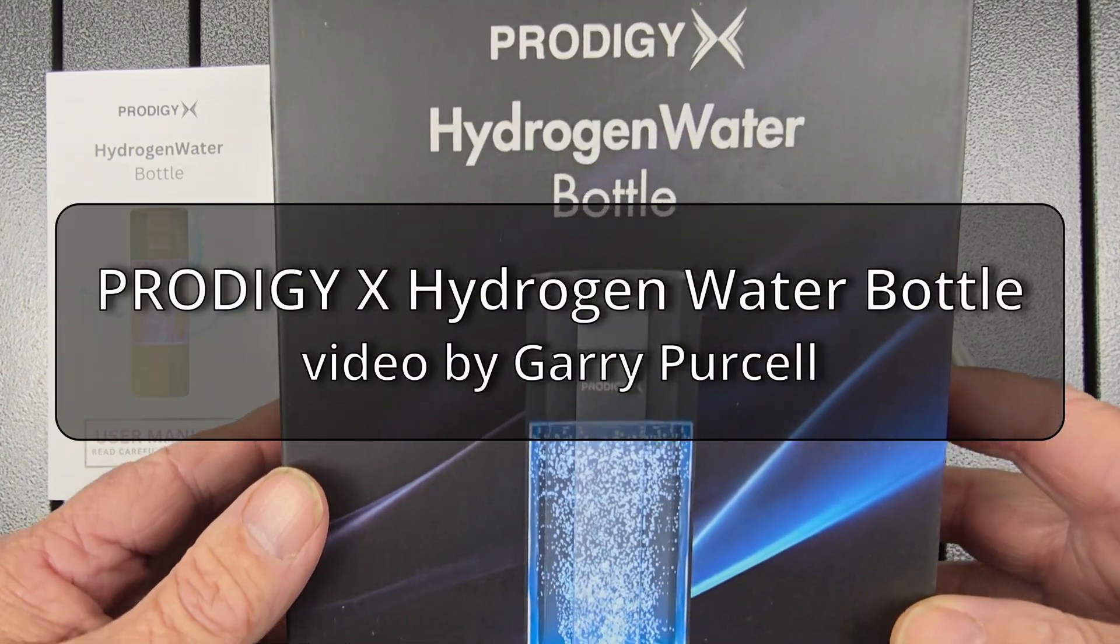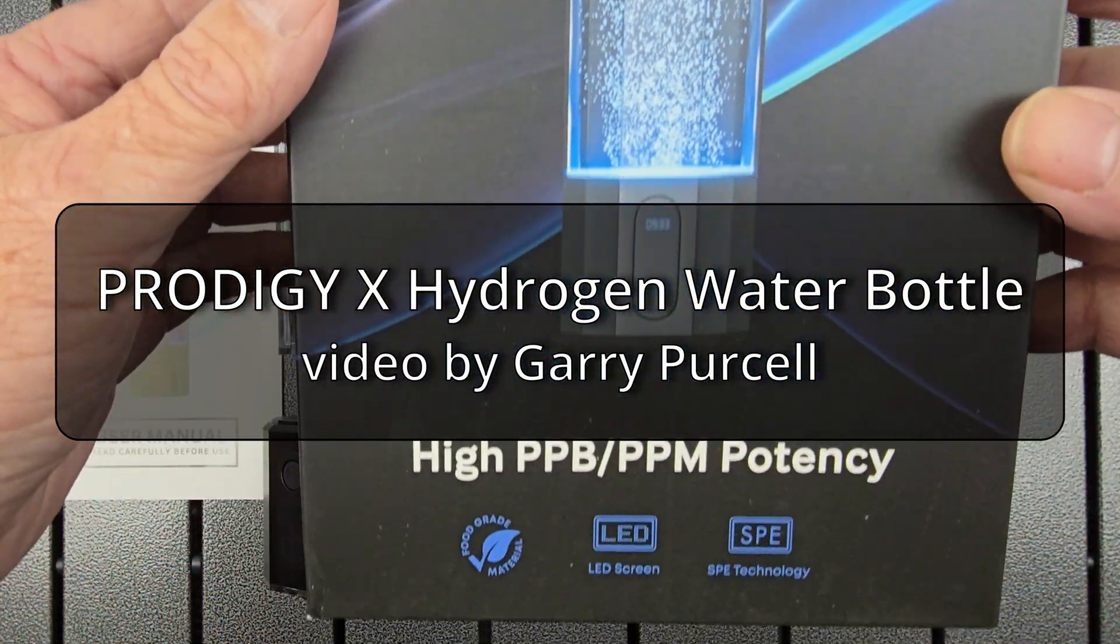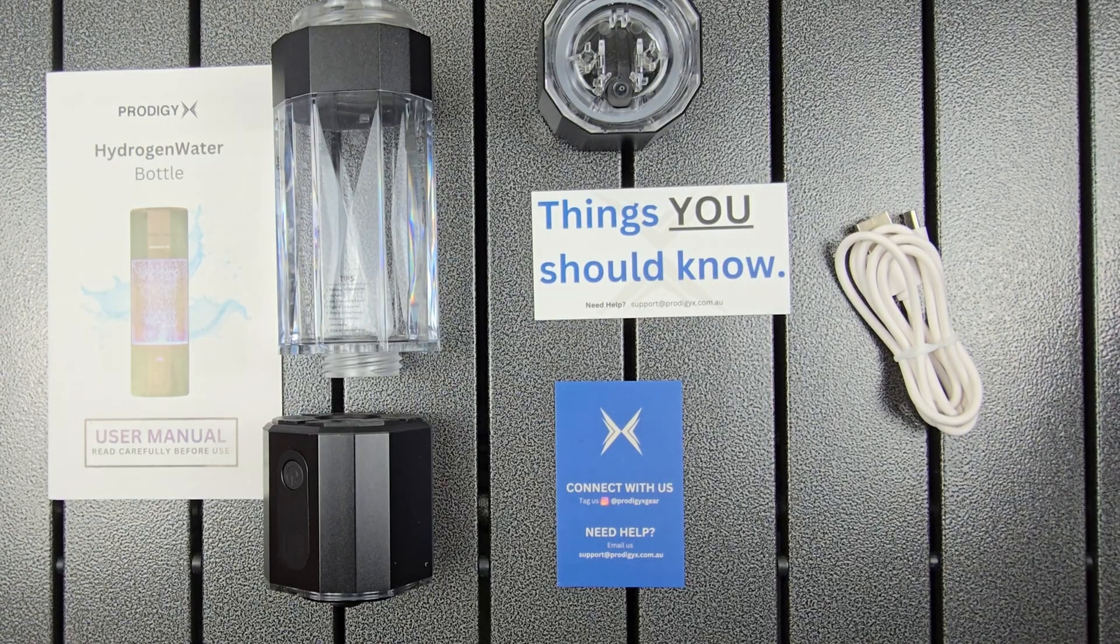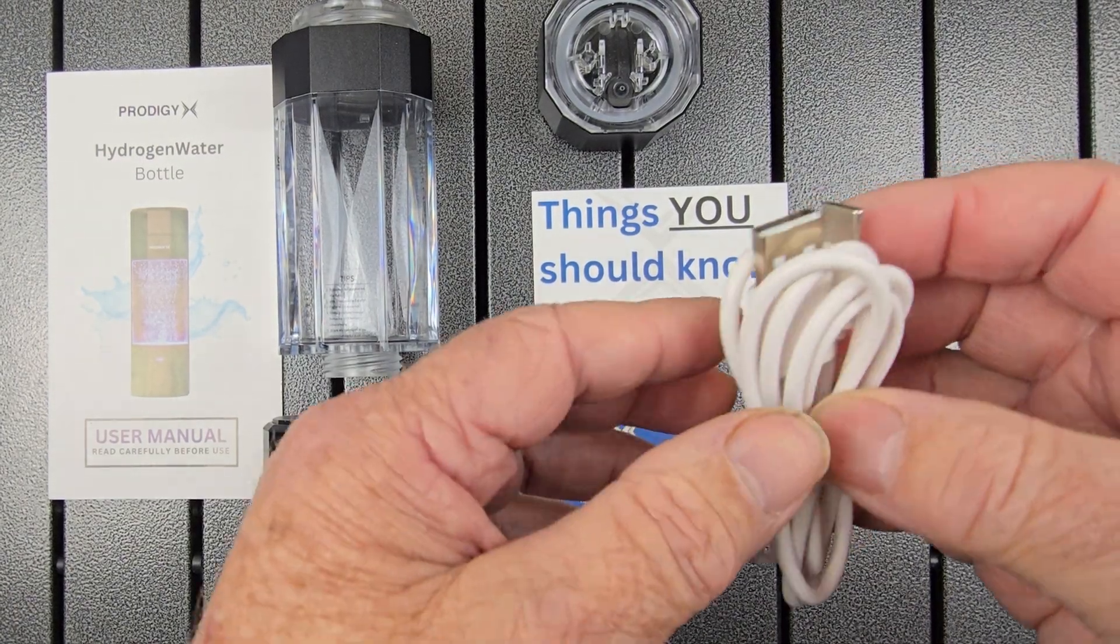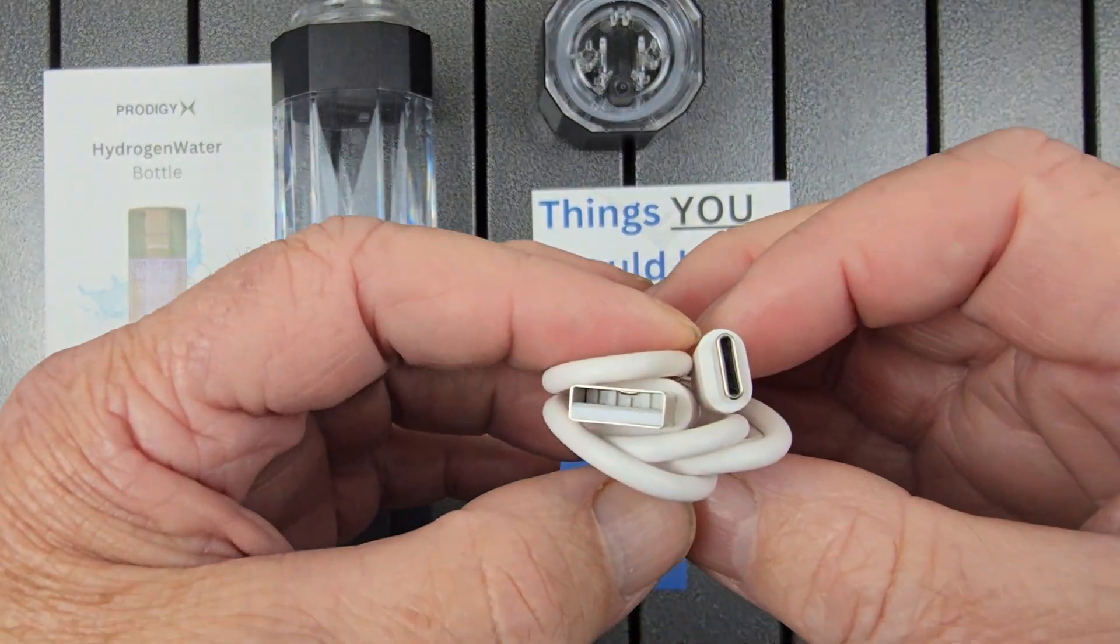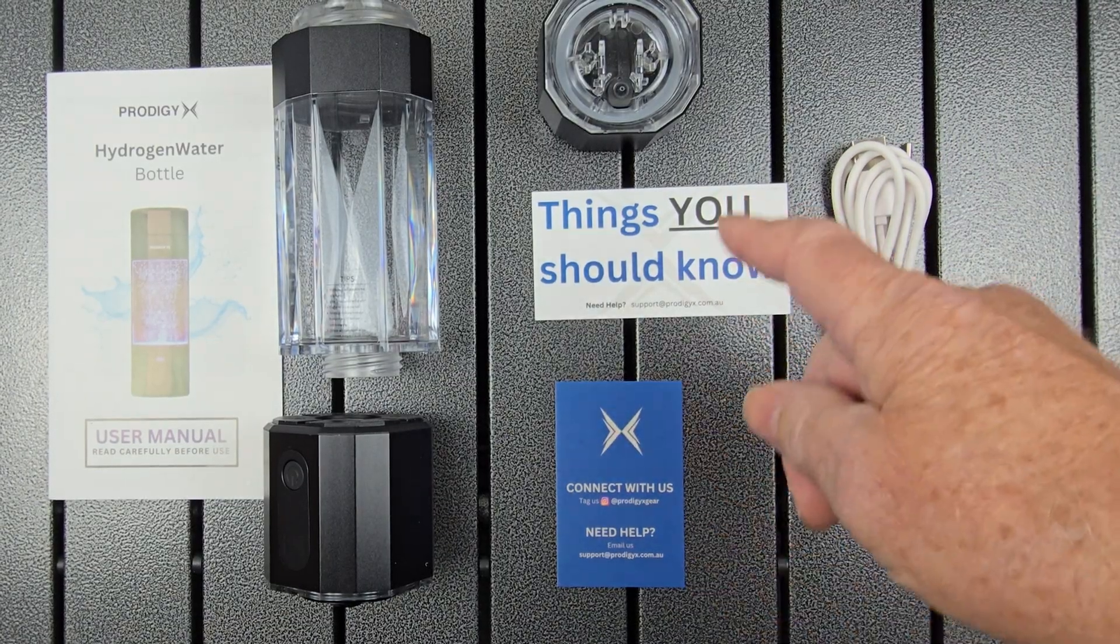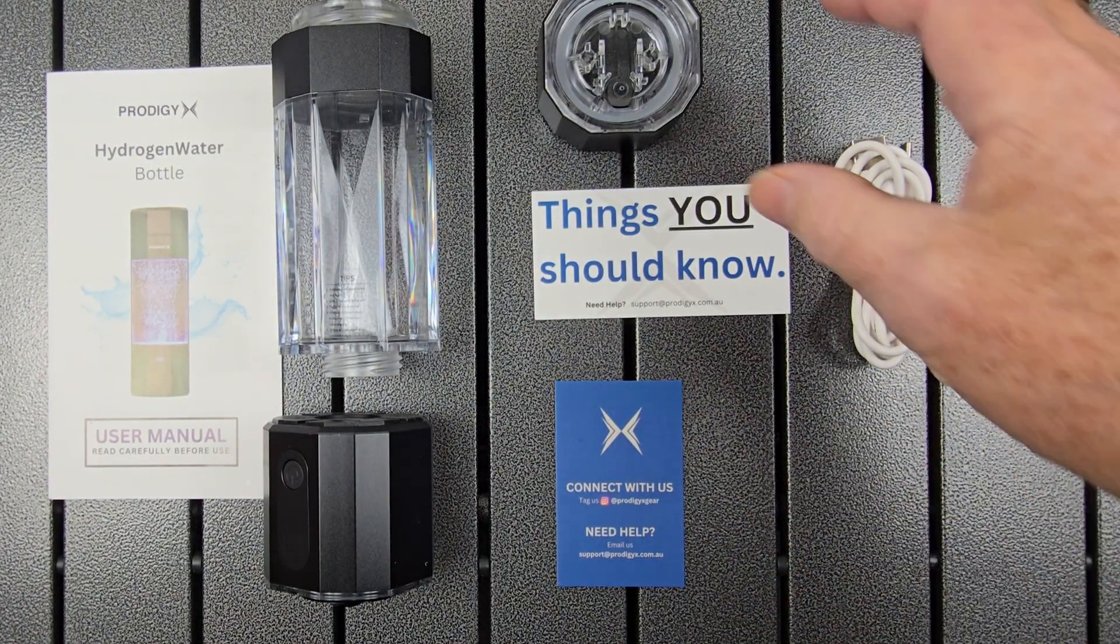This is the Prodigy Hydrogen Water Bottle. This is the box and everything that comes inside. You have a charging cable which is USB Type-A to USB Type-C, a couple of little cards, information bits and pieces.